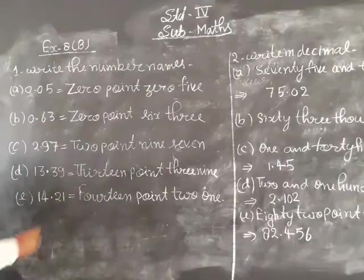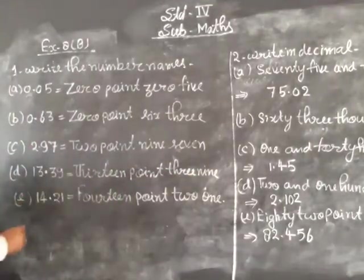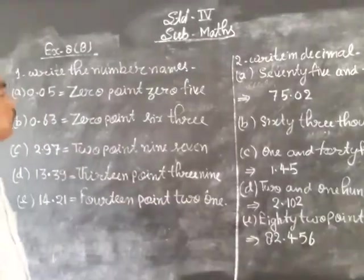Part number D: 15.39. Part number E: 14.21. Next question number 2.